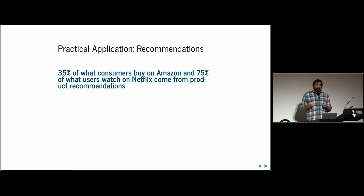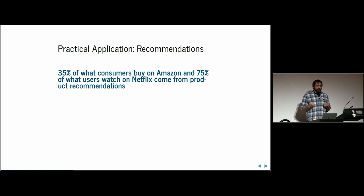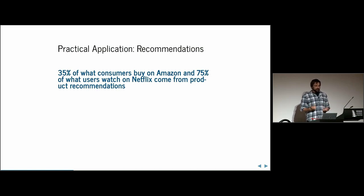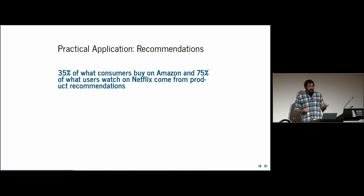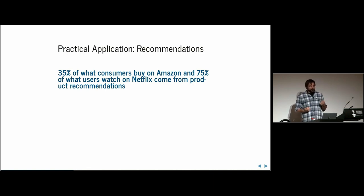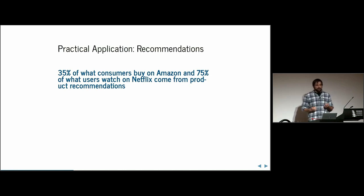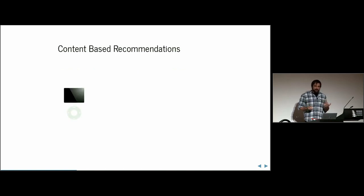That's the basis of a lot of graph algorithms, and especially the basis of a lot of recommendation systems. The importance of recommendation systems is captured in this quote: 35% of what consumers buy on Amazon and 75% of what users watch on Netflix come from product recommendations. That's a high-impact tool to have under your belt.